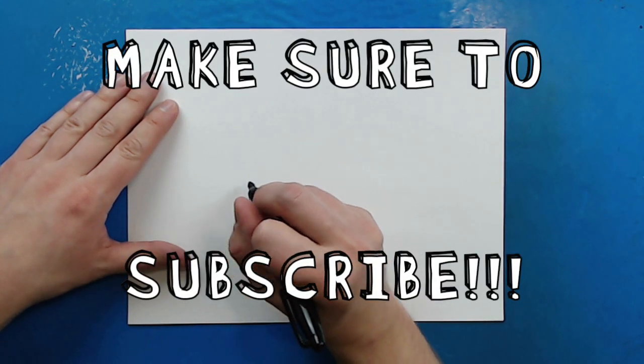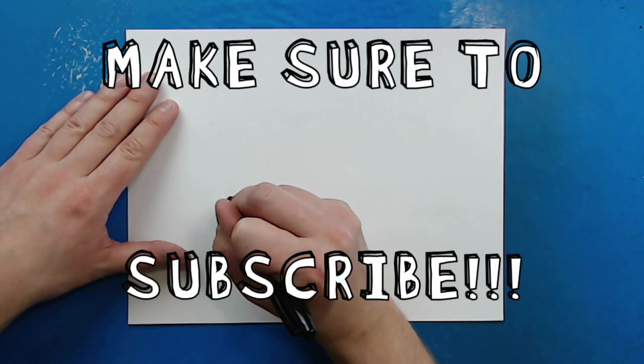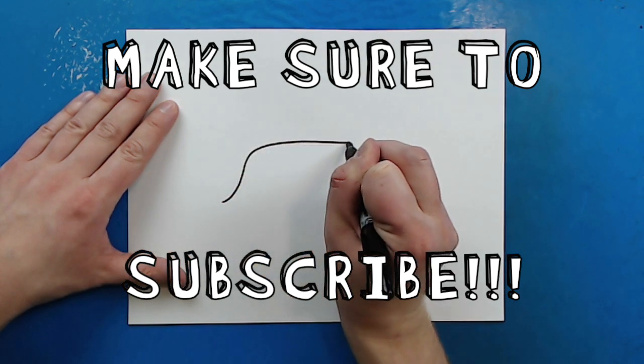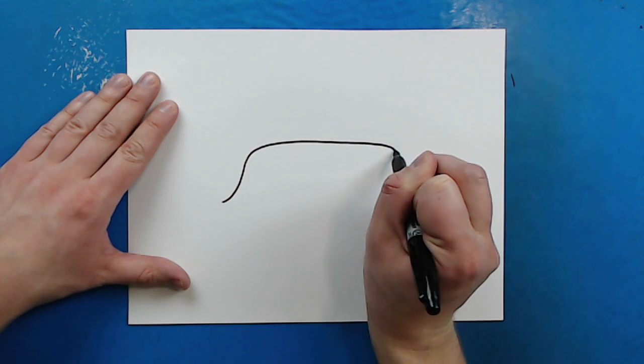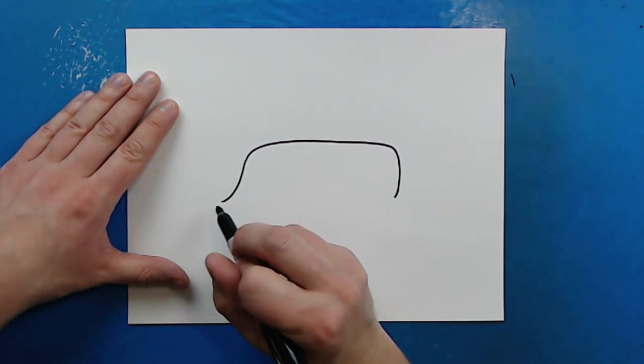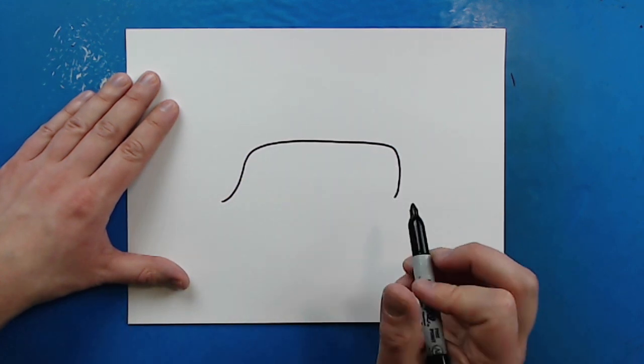Starting right here on my paper, I'm going to draw a line that's just going to curve up and then I'm going to go over like this and then I want to come down here. It's kind of like a big curve line. It's just going to go up, over, and then it's going to curve back down.